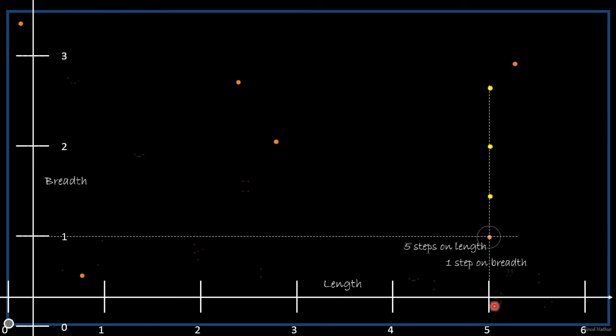Instead of just one number line, I put two number lines. To get to this point, I need to move one step in this direction. To uniquely identify this point from this reference, I have to say five steps on the length and one on the breadth. This is very dependent on the reference.